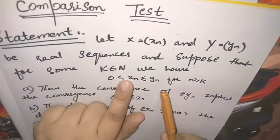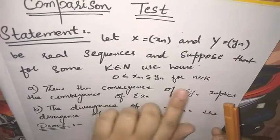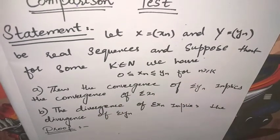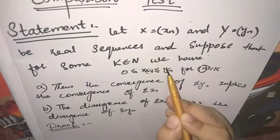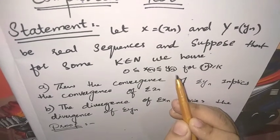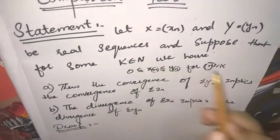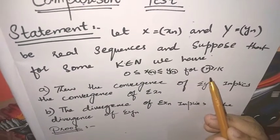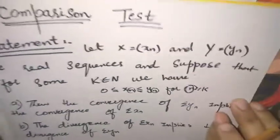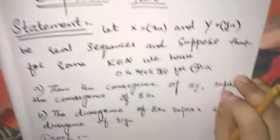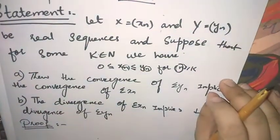xn کی terms yn کی terms سے چھوٹی ہوں گی، یعنی yn کی بڑی ہوں گی، for n ≥ k۔ یہ indices کی بات ہو رہی ہے۔ k جو ایک set of natural numbers میں سے ہے، اس سے n بڑا یا equal ہوگا۔ یہ ساری given تھی — یہ comparison test کی statement کا given حصہ ہے۔